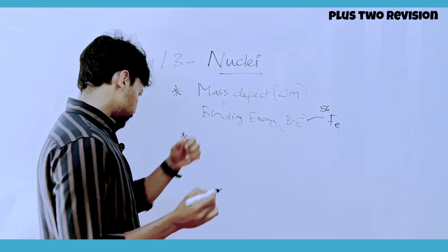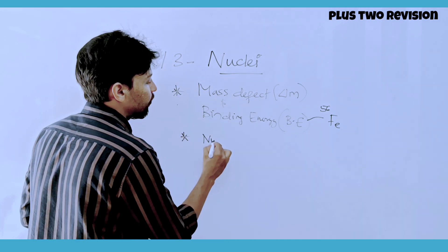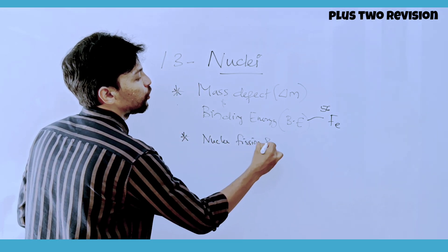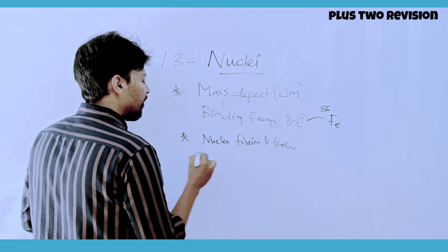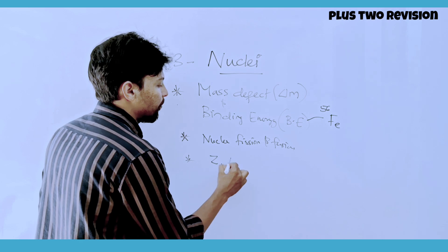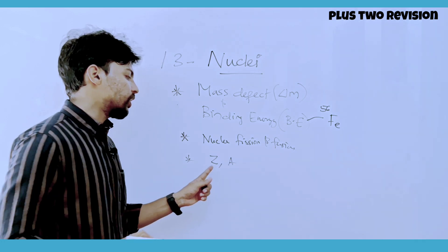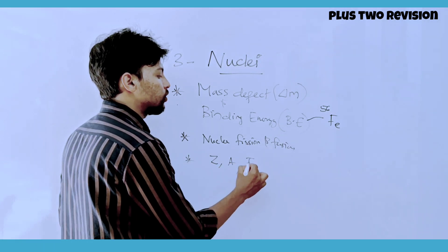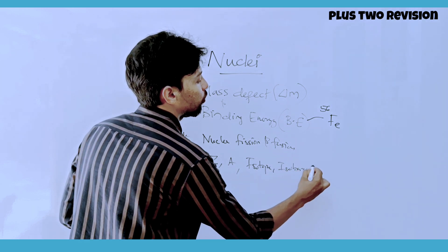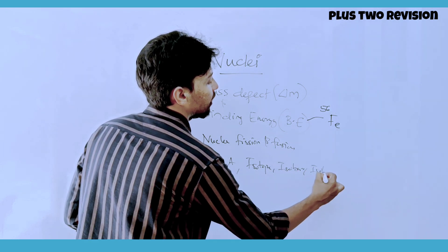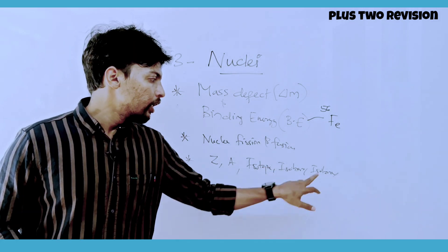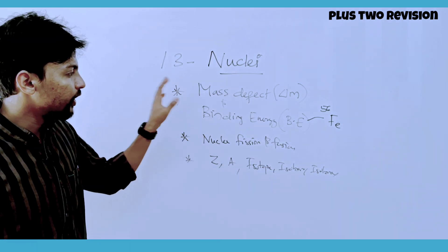We will also discuss nuclear fusion and nuclear fission. The atomic number and mass number A are important. Isotopes share the same atomic number, isobars share the same mass number, and isotones share the same number of neutrons.